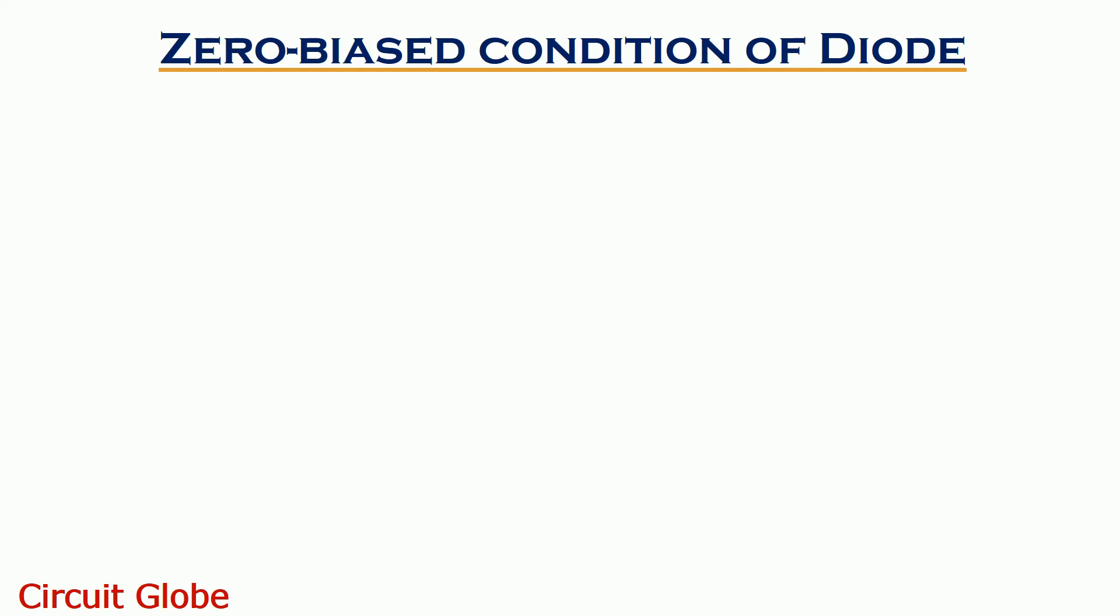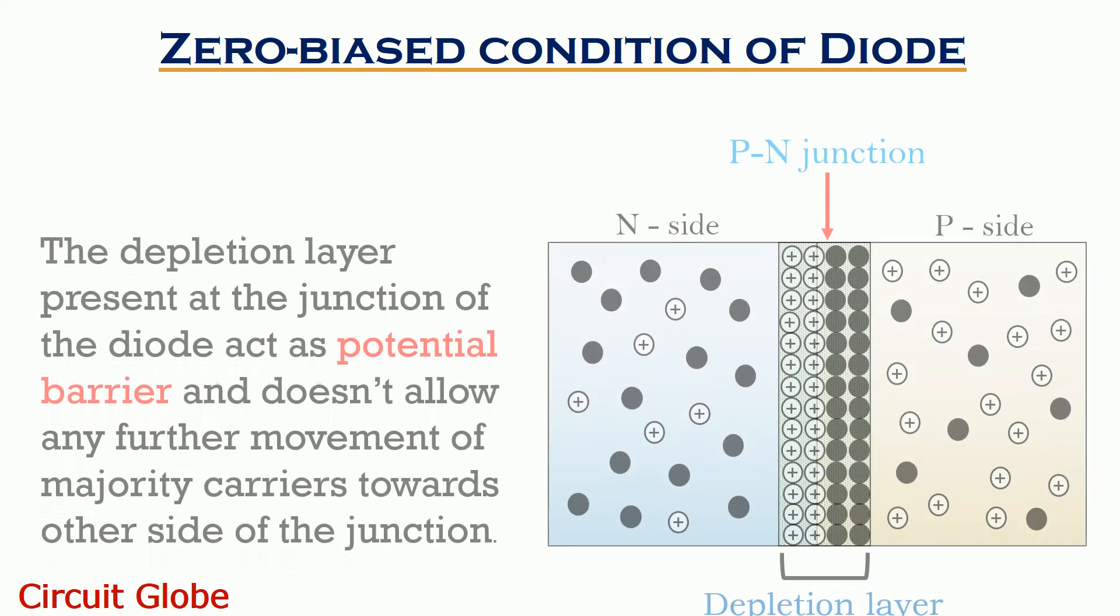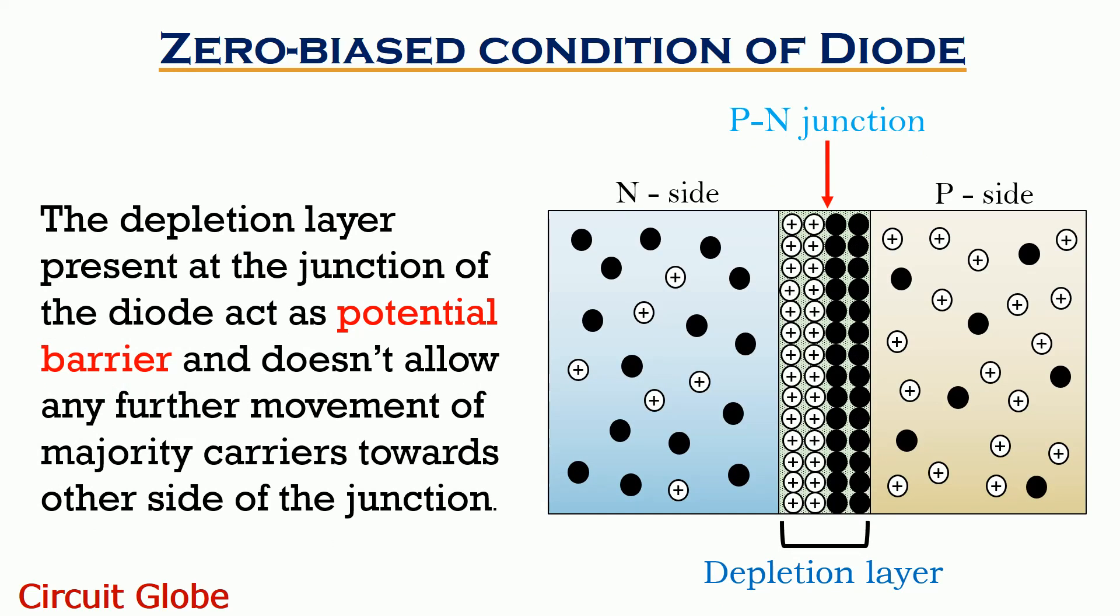Due to thermal excitation, the electrons from N side combine with the holes from the P side and accumulate at the junction as we can see here.